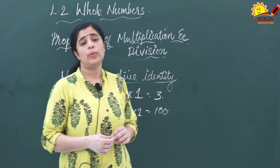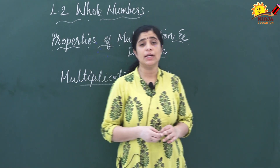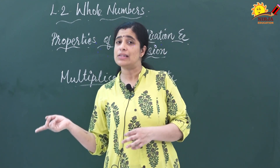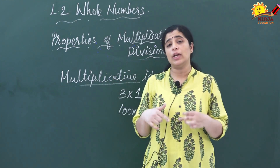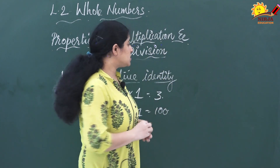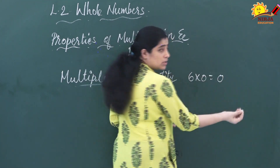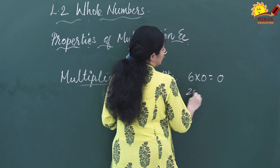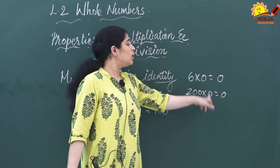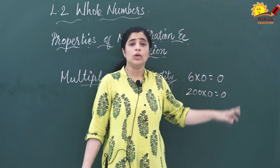What about 0? When you are multiplying 0 by any number, what are you getting? Yes, 0. When you add 0 to any number you get the same number, but when you multiply 0 by any number you get 0. For example, 6 × 0 = 0, and 200 × 0 = 0. So multiplying by 0 always gives 0.